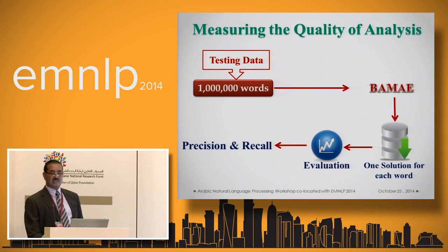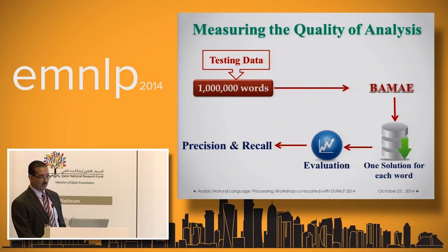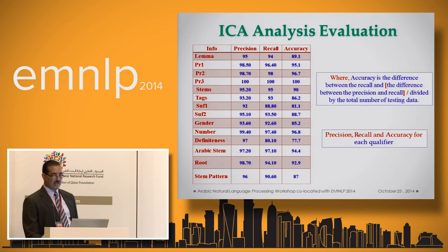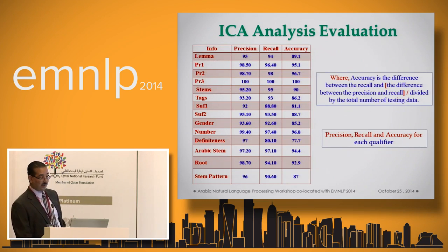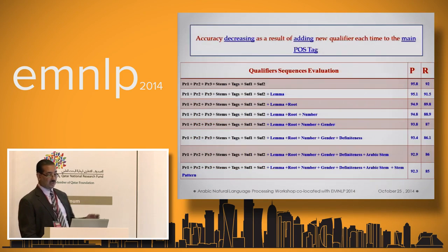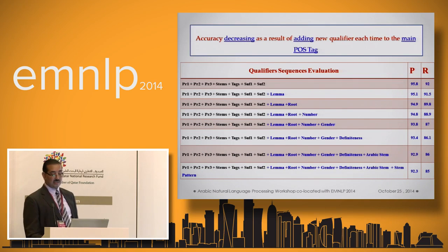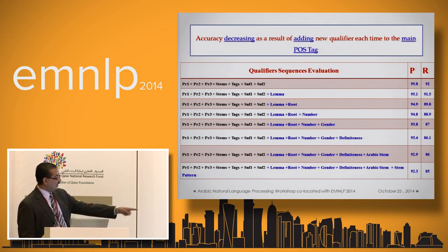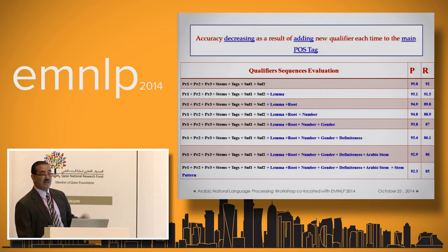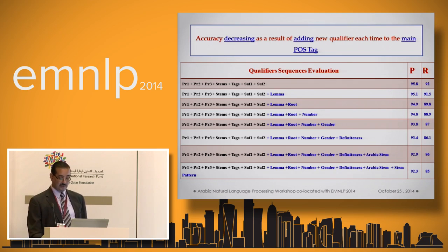For evaluation, we picked one million words and tried to calculate precision and recall. In most cases, every qualifier is performing very well. The problem occurs only when we compile everything together — then the accuracy goes from 95% down to 85% when we require everything to be correct across the whole analysis.